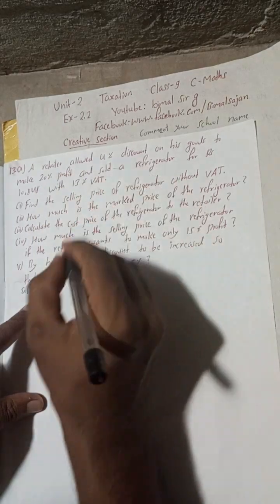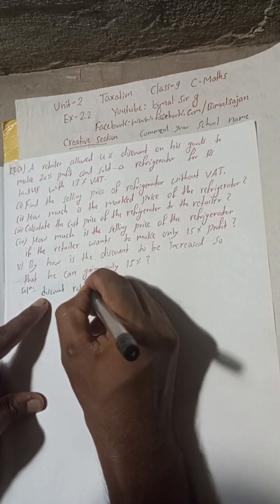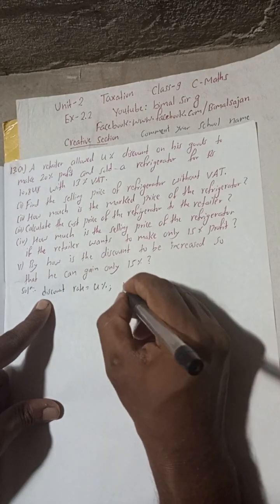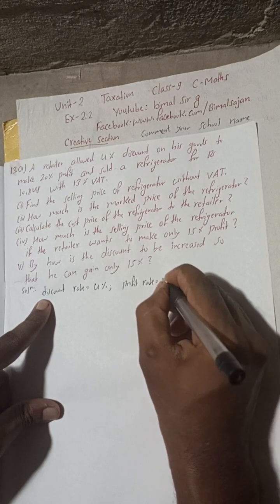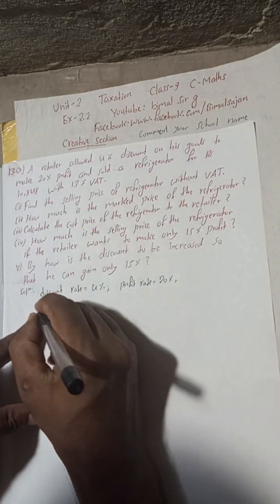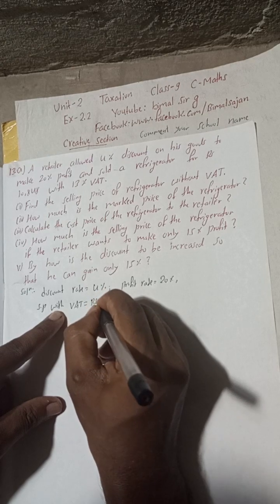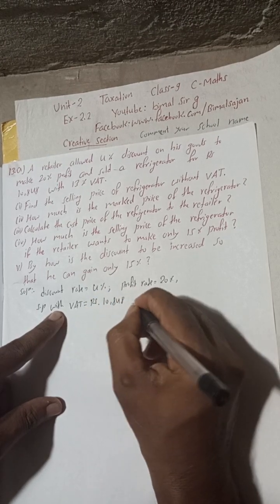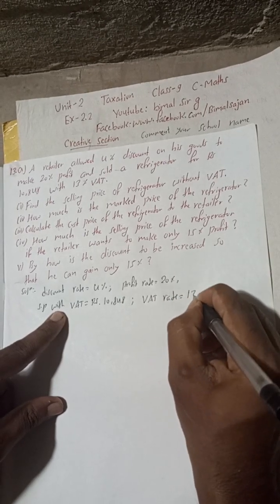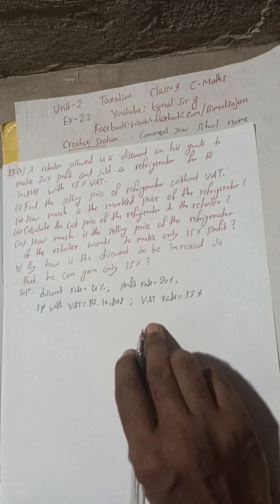Given: discount rate = 4%, profit rate = 20%, SP with VAT = Rs 10,848, and VAT rate = 13%. We are given the discount percent, profit rate, SP with VAT, and VAT rate. Now we can find the SP without VAT.